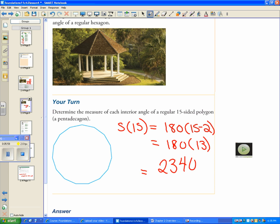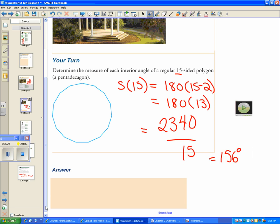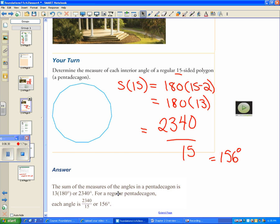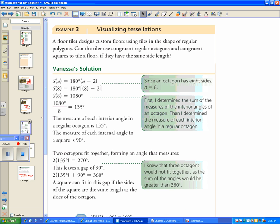Now how do I find what one angle has? How many angles are there total? I divide this by 15 to get my final answer. 2,340 divided by 15 is 156 degrees per angle. Let's see if we got the right answer that they did. 156 degrees, looking good.